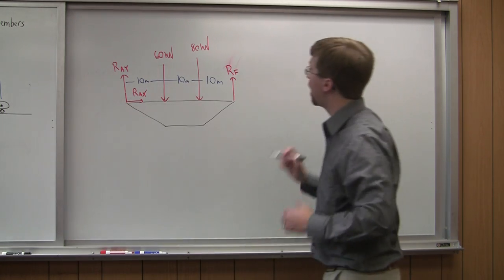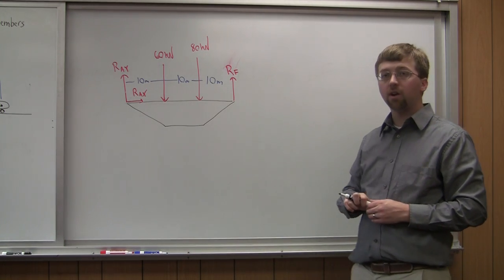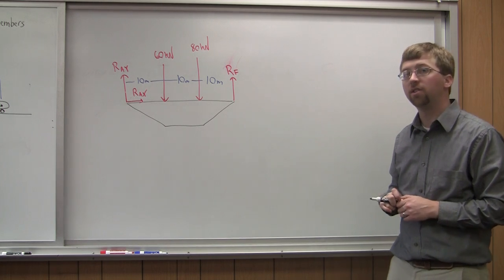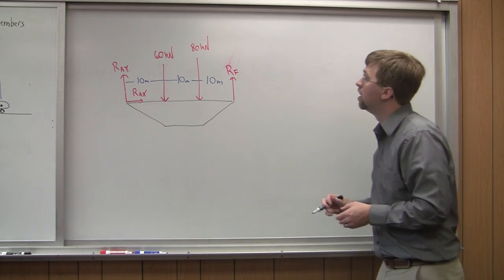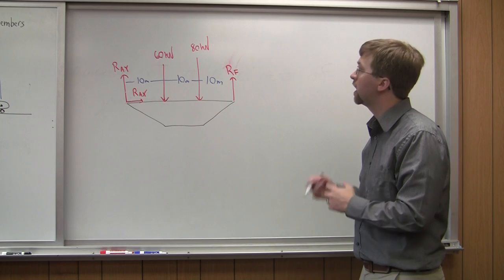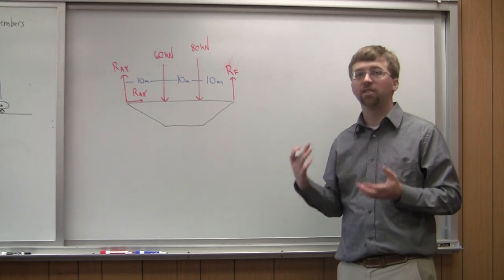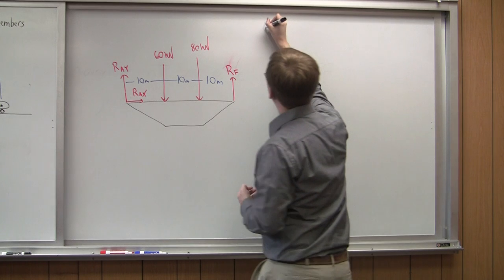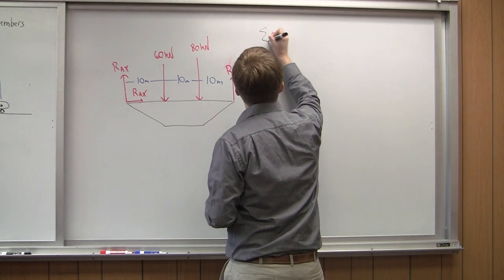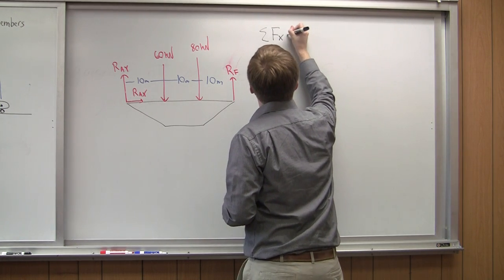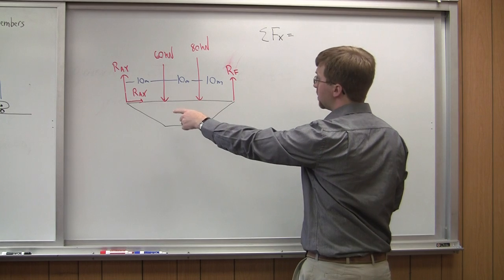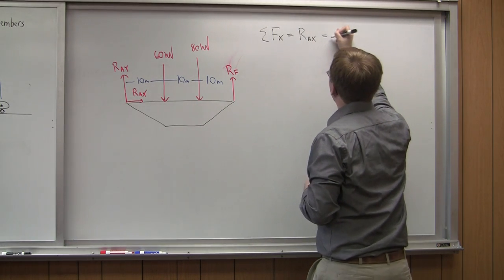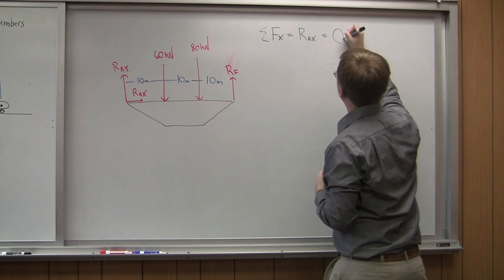Our free body diagram is now set up. The next thing we want to do is solve our equilibrium equations: sum of forces in X, sum of forces in Y, and sum of moments about point A. For sum of forces in X, we only have RAX, so RAX equals zero. We've already solved for one reaction force.